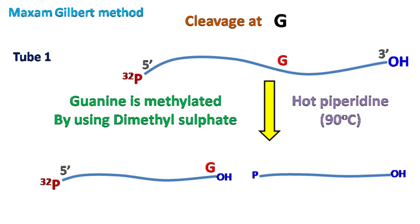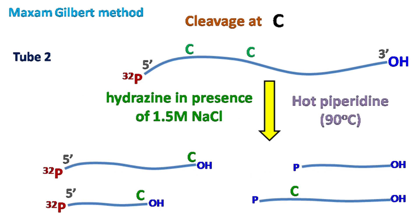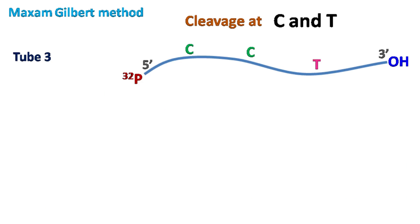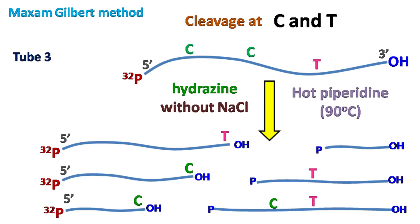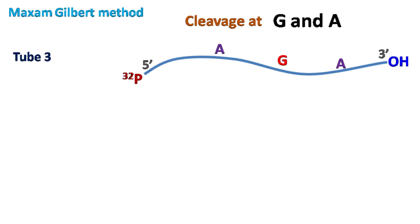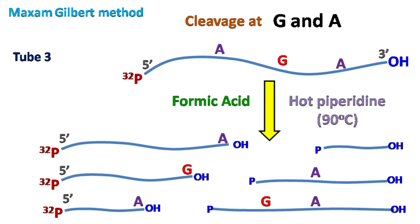When the methylated guanine is treated with hot piperidine, the sugar-phosphate backbone gets cleaved. For cleavage at C, hydrazine in the presence of 1.5 molar NaCl and piperidine will cleave the chain at cytosine. For cleavage at C and T, hydrazine and piperidine without NaCl will cleave at cytosine and thymine. For cleavage at G and A, formic acid along with piperidine will cleave the polynucleotide chain at G and A.